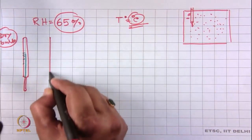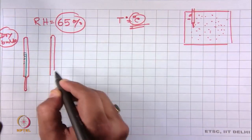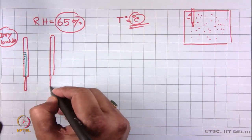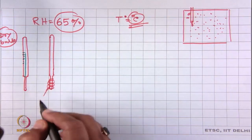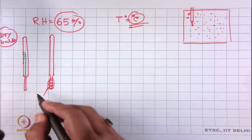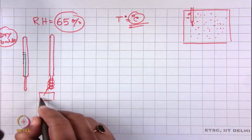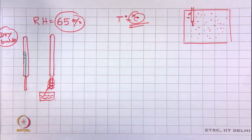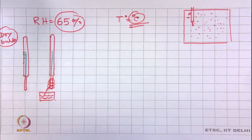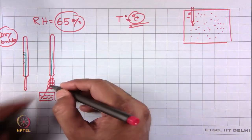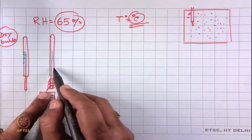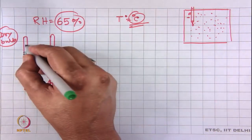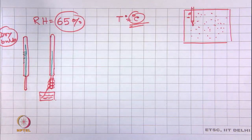Another thermometer is wrapped with some wet cloth, and this wet cloth should always be kept wet — there will be some water source. If this wet wrapping is not done, both thermometers will show the same reading. If we simply dip the bulb under water, it will only measure the temperature of water, which is not what we want — we want to measure the humidity present in air.